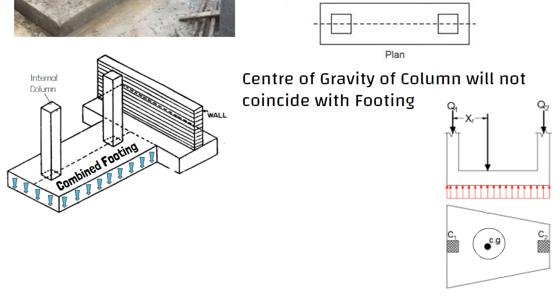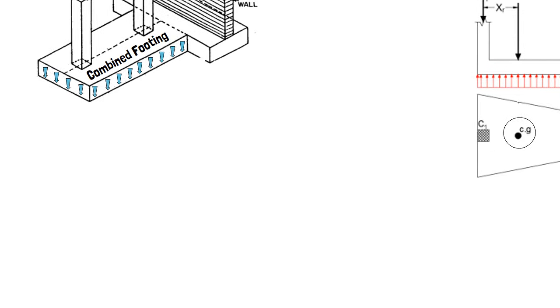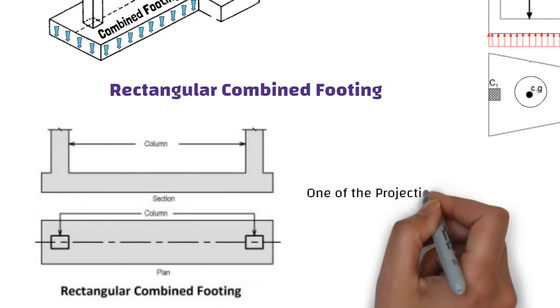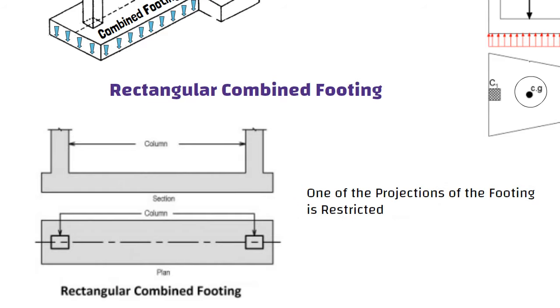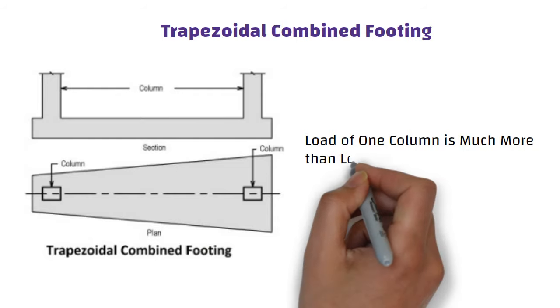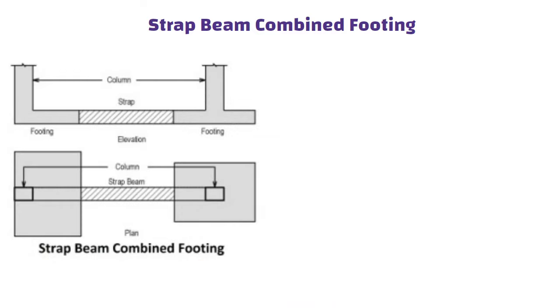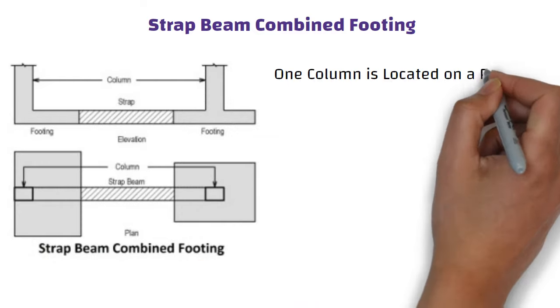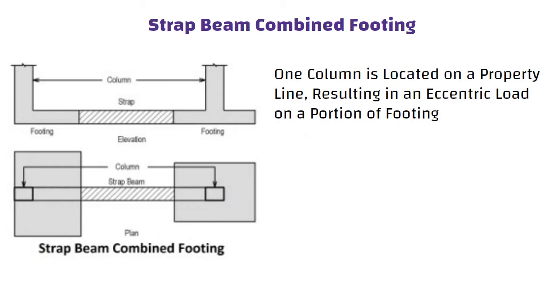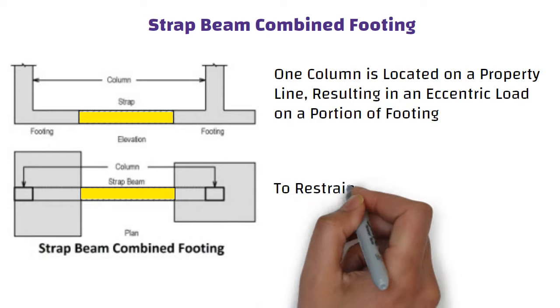Combined footings are further classified into the following types based on their shapes. Rectangular combined footing: provided when one of the projections of the footing is restricted or the width of footing is restricted. Trapezoidal combined footing: provided when the load of one column is much more than the load of the other column. Strap beam combined footing: used when one column is located on a property line, resulting in an eccentric load on a portion of the footing. Therefore, a beam is provided to the adjacent column footing to restrain the overturning effect.